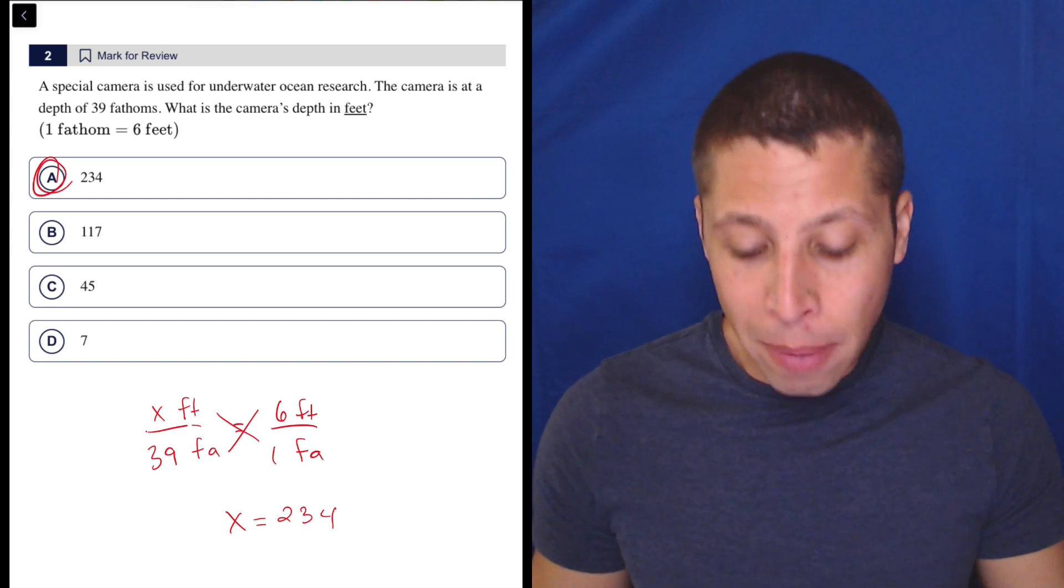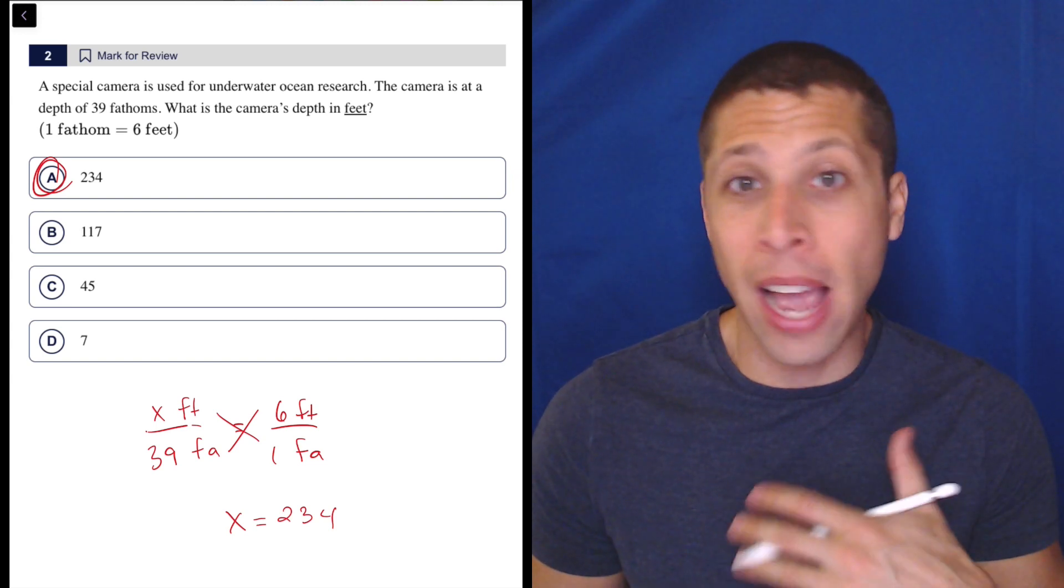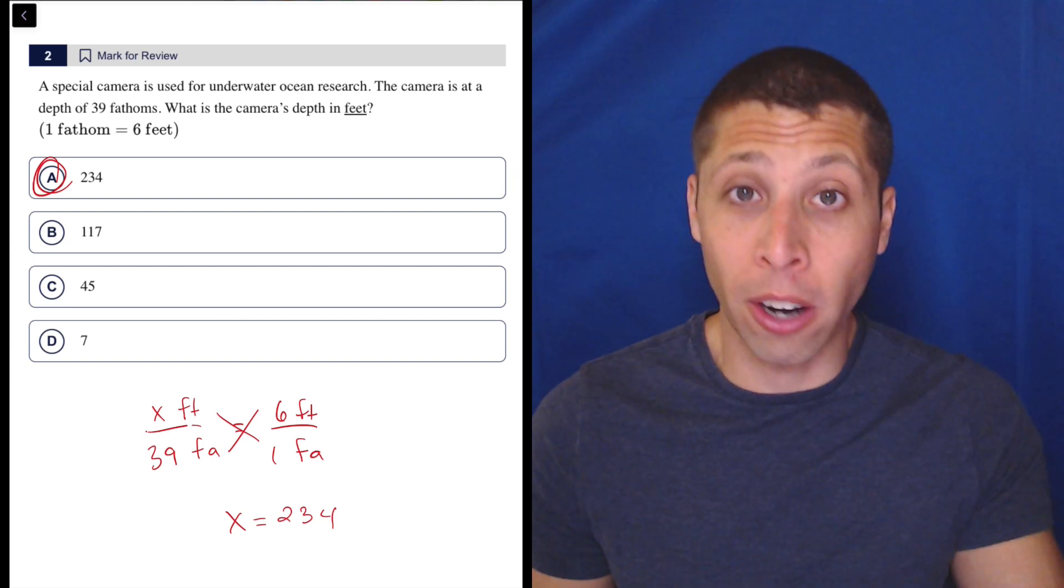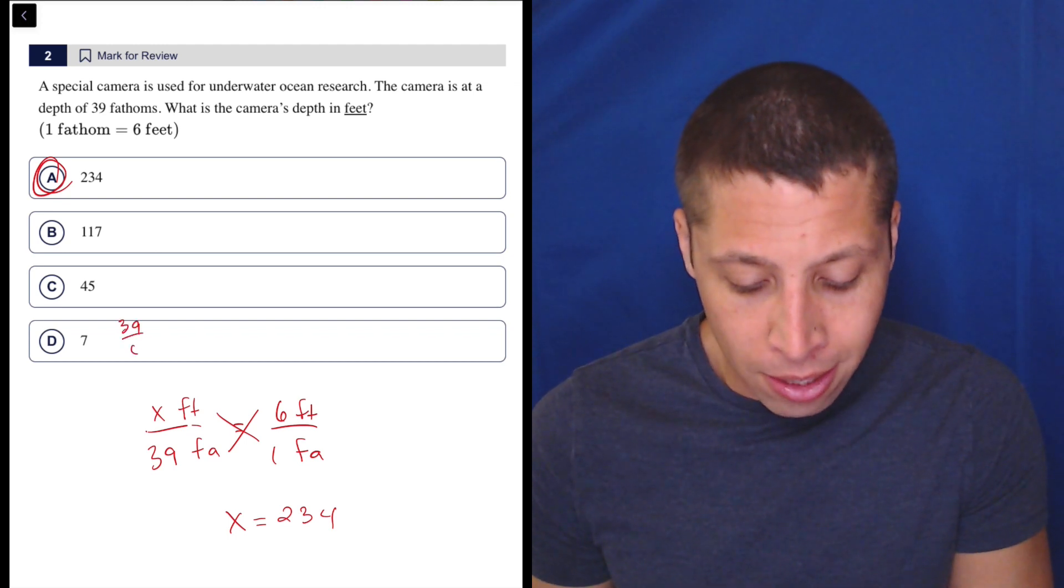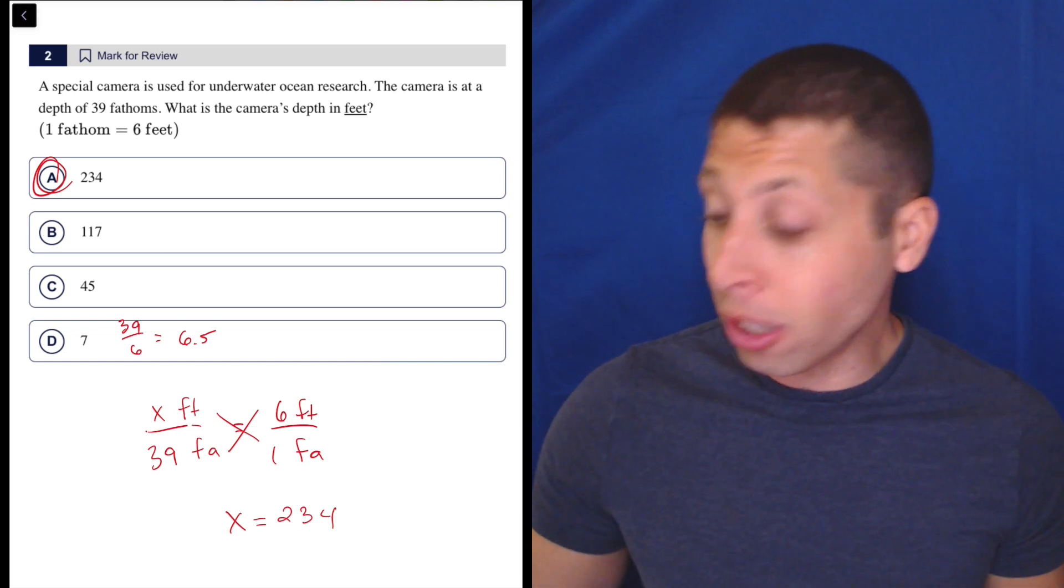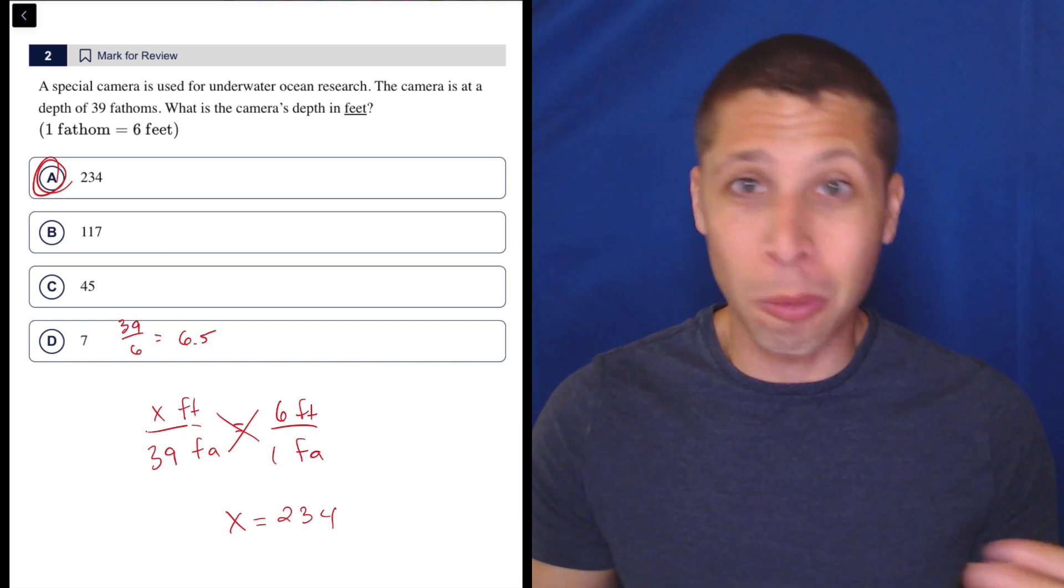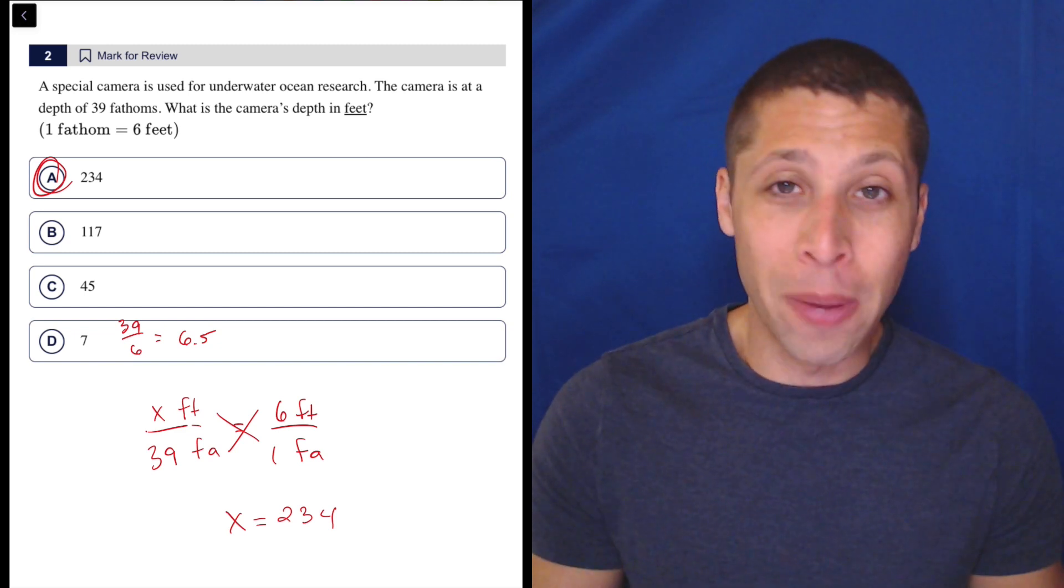But the reason I'm making a big deal about it is they get harder. And so if we had bad habits and we'd end up doing the wrong arithmetic as we're doing it in our head, we might end up with a choice like D, seven. Because if we did 39 divided by six, that's 6.5, not quite seven. But certainly if you were really sure that you are so smart, you could never get anything like this wrong, you'd be like, oh, they just rounded it. And you'd pick D.